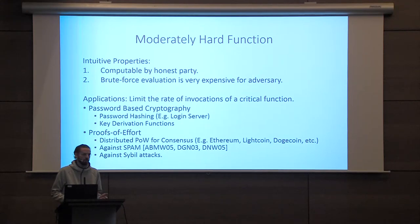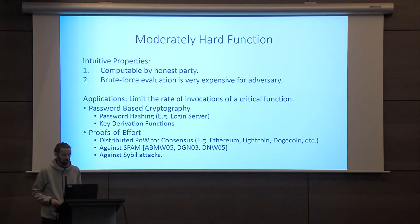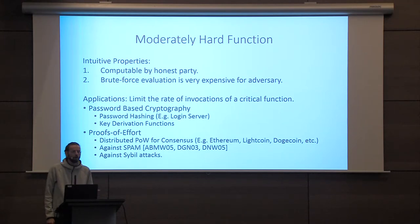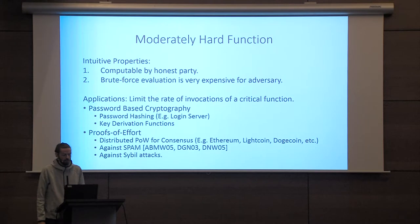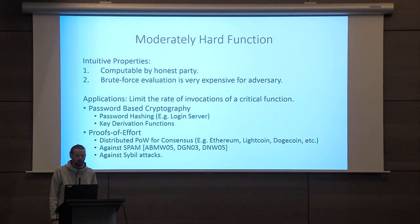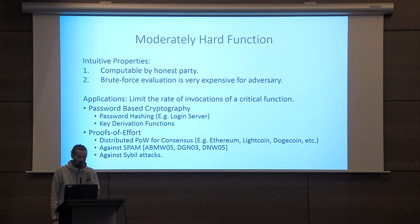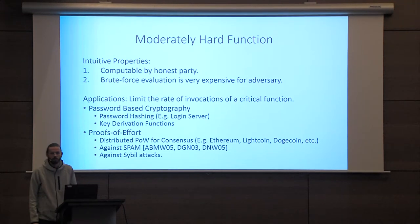Another example where you want this sort of rate limit on evaluating functions is proofs of work — for example, the distributed proof of work underlying most cryptocurrencies. Also, this was probably one of the earliest examples of moderately hard functions: combating spam. And also Sybil attacks.